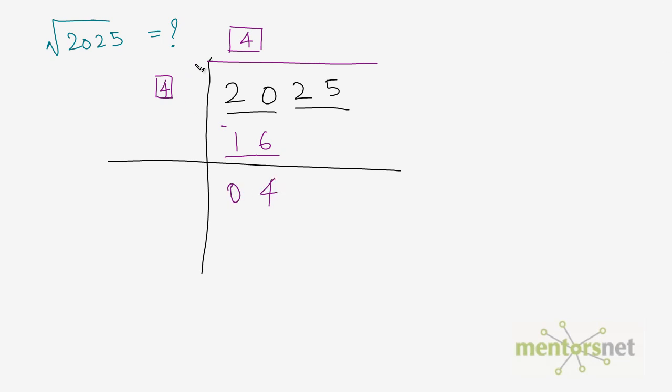Now the second step is you have to add these two numbers. So, 4 plus 4 is 8. Now 8 is fixed. There is another box now and another box here. Now, you have to have the same number in these boxes. But before we do that, let us bring this 25 down.